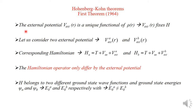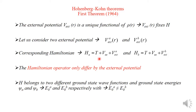This theorem states that the external potential V(R) is a unique functional of the density. The external potential fixes the Hamiltonian. Let us consider two external potentials: V_external_A and V_external_B, which are functions of the radial coordinate. The corresponding Hamiltonians are H_A and H_B, where H_A corresponds to external potential A and H_B to external potential B.